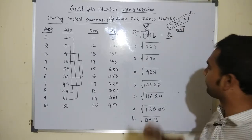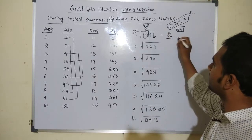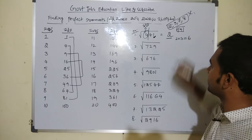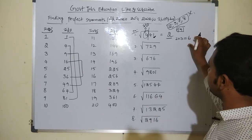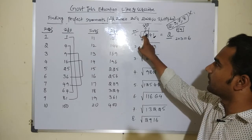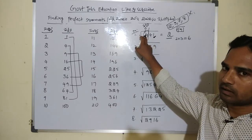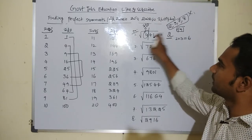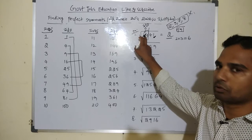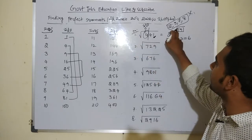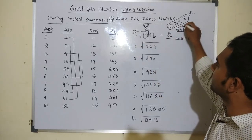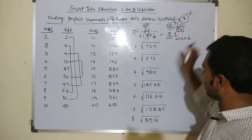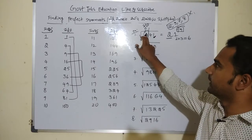To determine which one: we take the tens digit (2) and multiply by the next number. 2 multiplied by 3 is 6. We compare the left side value — it is 6. Since they are equal, 21 square equals 441. The answer is confirmed as 21.